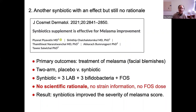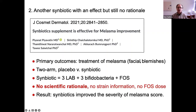The strain had a rationale because they had done previous studies based on its ability to colonize and block adherence, but there was no scientific rationale for using the prebiotic — it wasn't even demonstrated that the strain could grow on the prebiotic. There's another study using a symbiotic for melasma, a kind of facial blemish. The study was two-arm, a symbiotic with six strains plus FOS, but again no scientific rationale, no strain information, and no FOS dose. So even though it was effective, you're left with the question of causality.